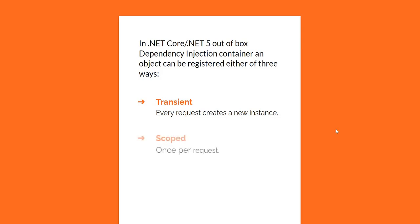The next lifetime is scoped. For a scoped application — let's say a web-based application or a web API — a scoped lifetime indicates that the instance of the object requested from the dependency injection container will be created once per request lifecycle. Meaning, once for an HTTP request, even if you call it five times, the same object created will be returned across the lifetime of that request. The object will be disposed at the end of the request.